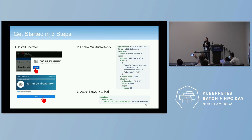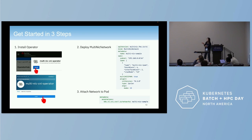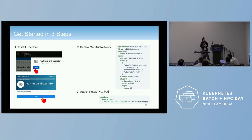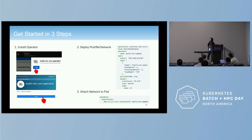To get started with ManVinix, there are just three simple steps. First, install the operators. Second, define the ManVinix network — just a single one — and no matter how many interfaces you have, they can be attached like an interface pool. Third, annotate that to the pod. This is built on top of Multus, so people who are used to Multus will simply understand and apply ManVinix CNI.